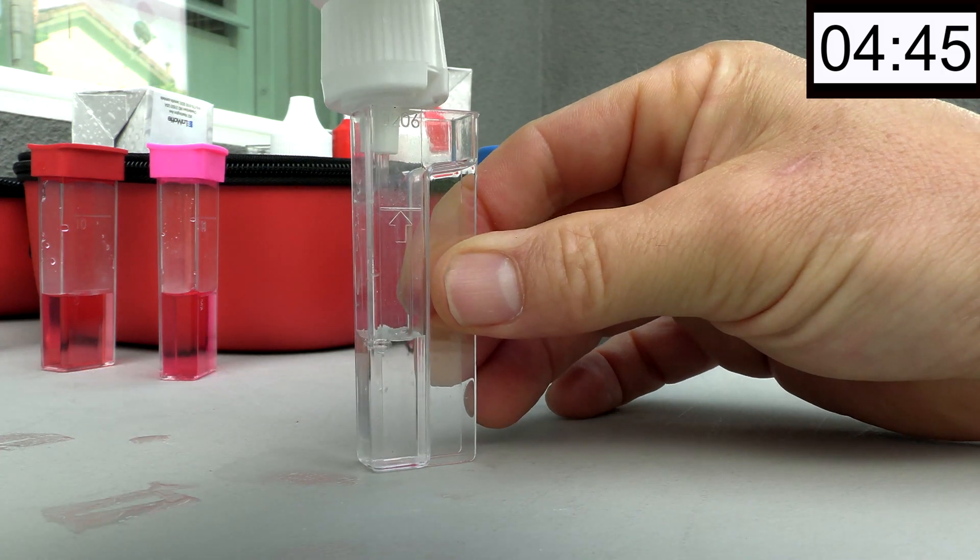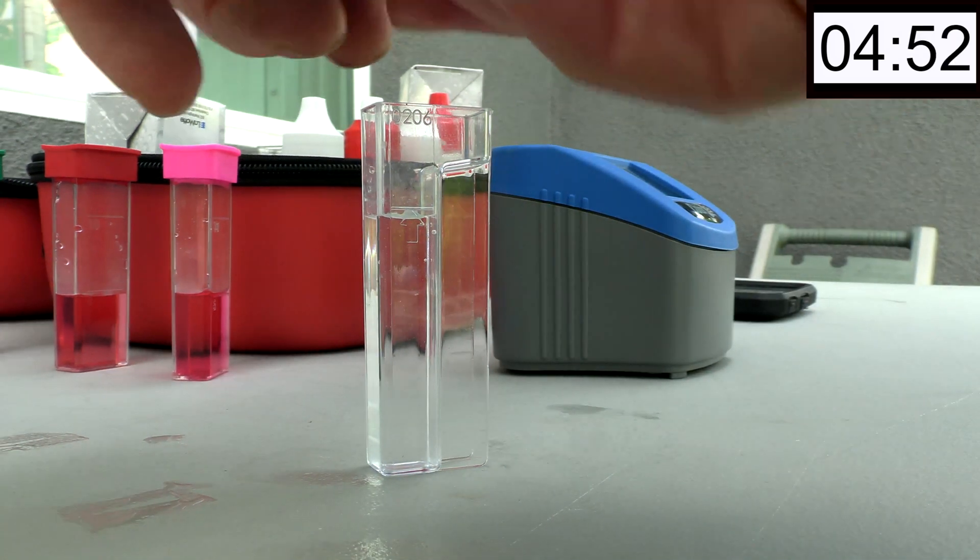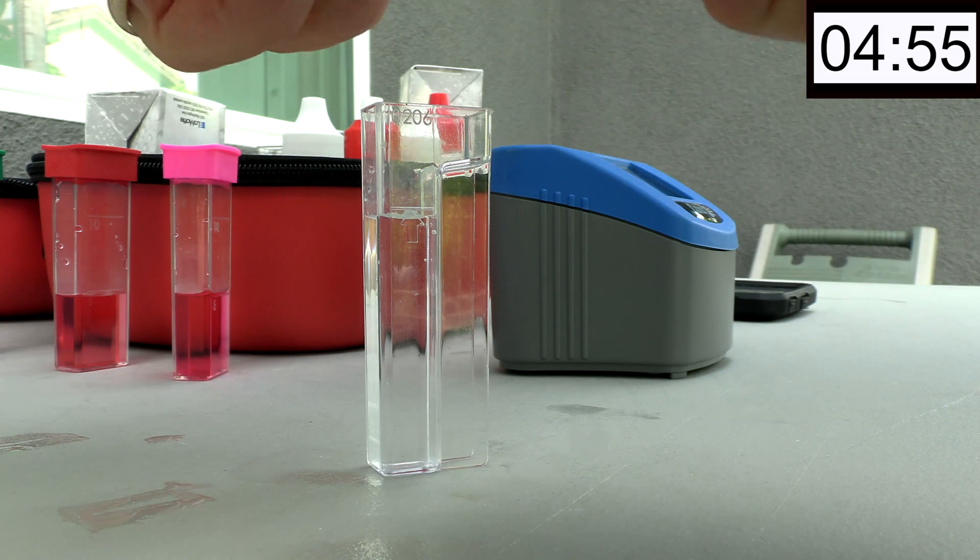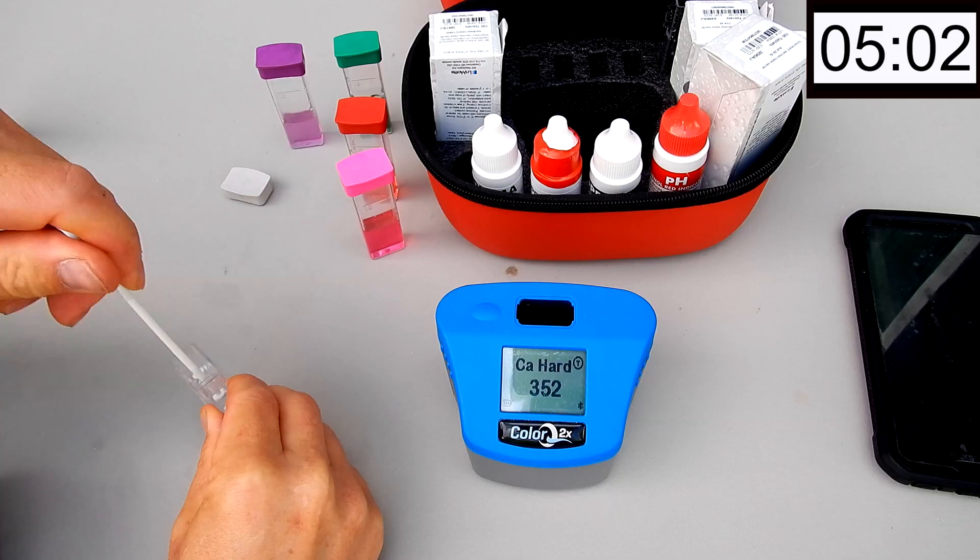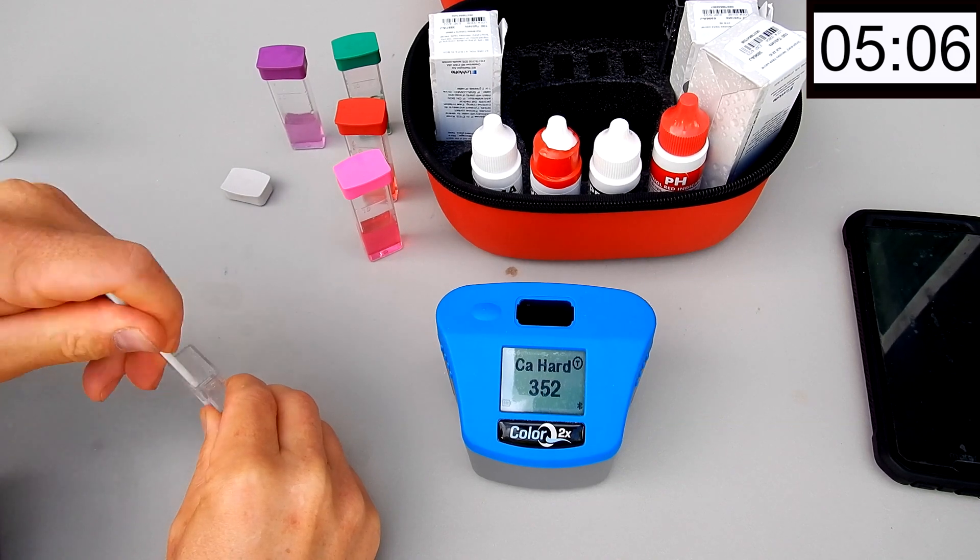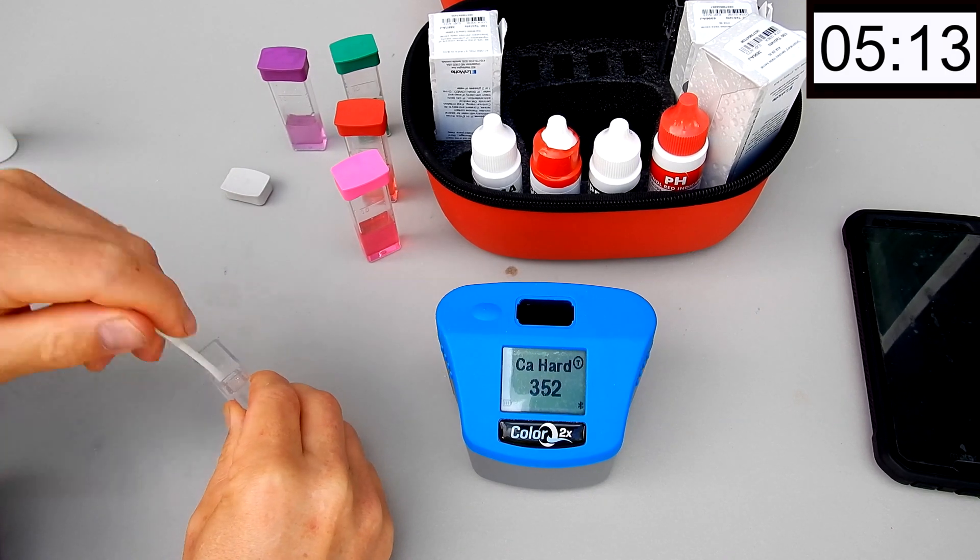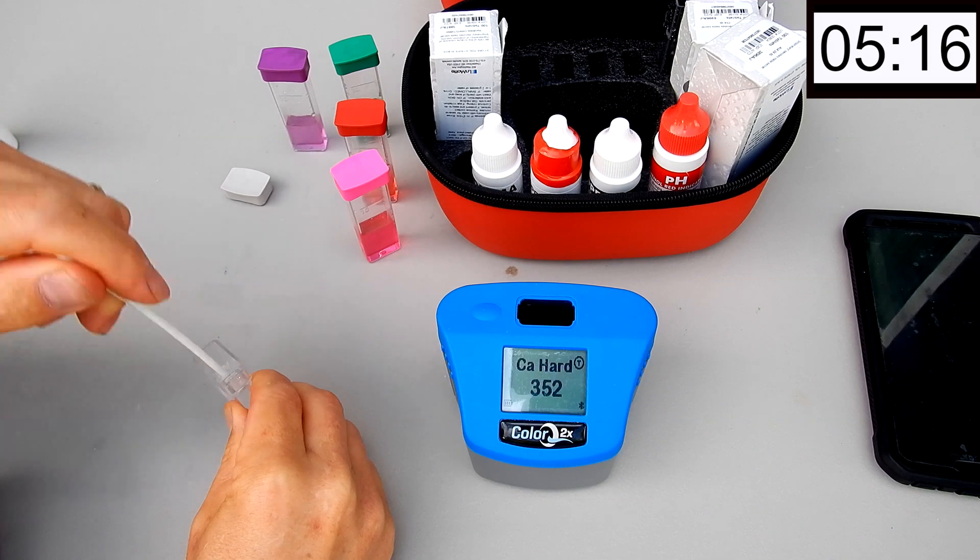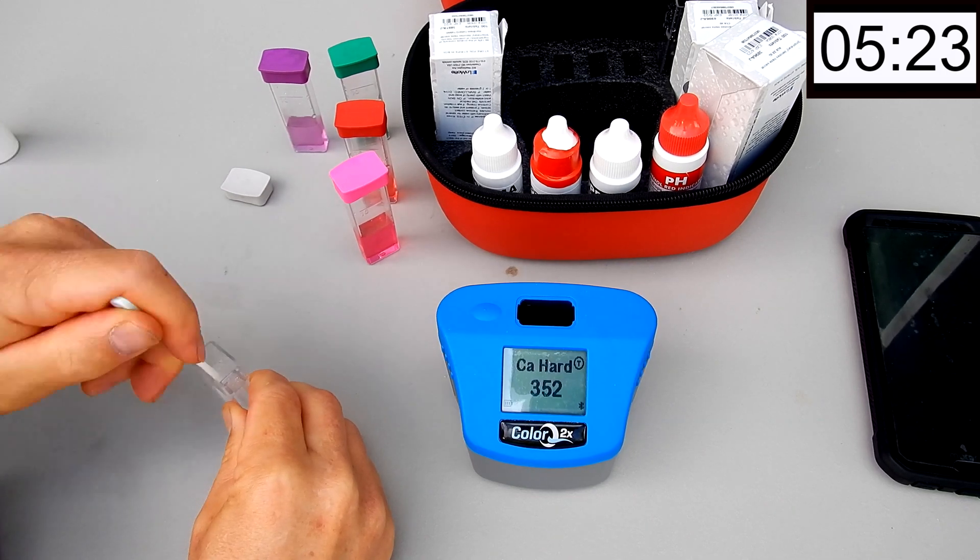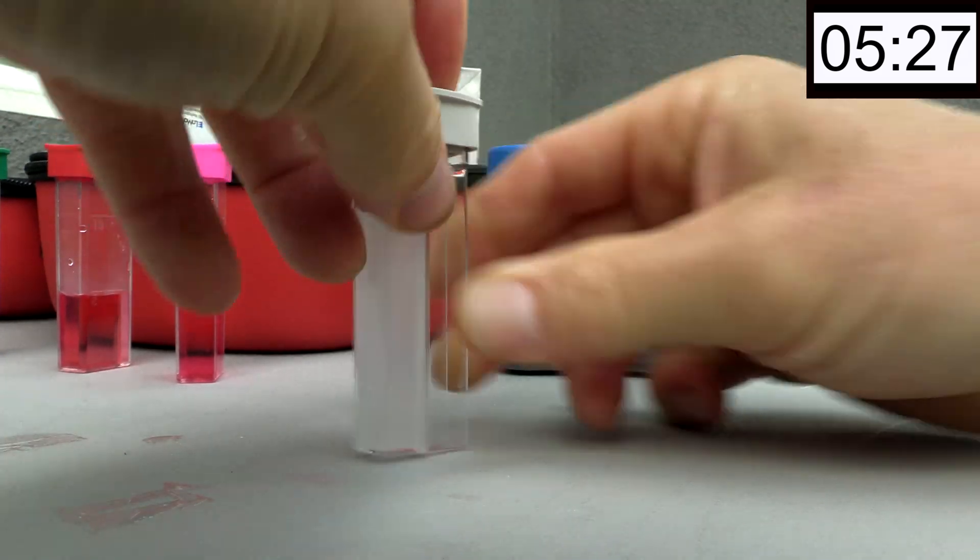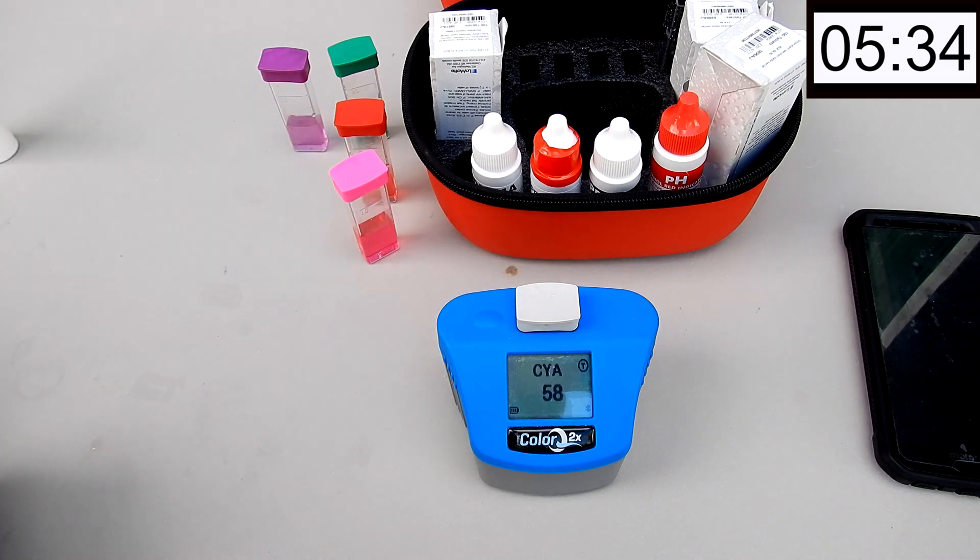This was a little bit different. I'll just fill it to the arrow. And the Cyanuric Acid has always been a tablet form with their other ColorQ Pro 7 kit. There's nothing new here as far as the Cyanuric Acid, except for the tube is a little bit different. You want to make sure you use this specific tube when you do the Cyanuric Acid test. Otherwise you're not going to get the right results. And the Cyanuric Acid is coming at a 58.